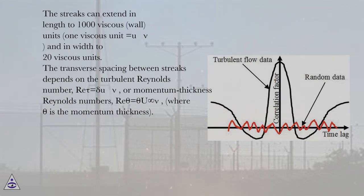The transverse spacing between streaks depends on the turbulent Reynolds number Re_τ = δU*/ν or momentum thickness Reynolds numbers Re_θ = θU/ν, where θ is the momentum thickness.